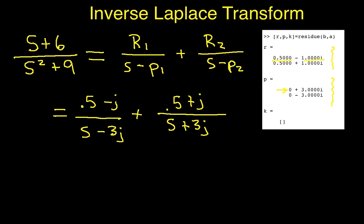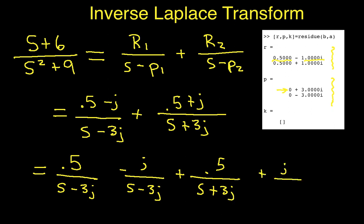Now what I'm going to do is I'm going to take each of these guys and break them into a sum of two fractions. And the reason I'm going to do that is that will allow me then to recombine things in ways that make all of a sudden a bunch of stuff simplify out. So I have 0.5 over S minus 3J, and then a minus J over S minus 3J, plus 0.5 over S plus 3J, plus J over S plus 3J.